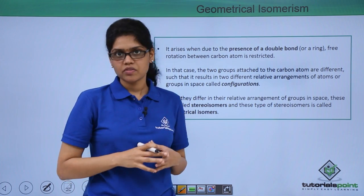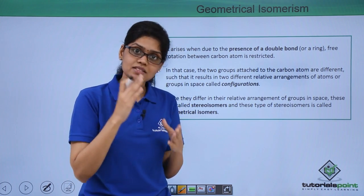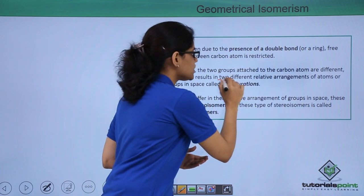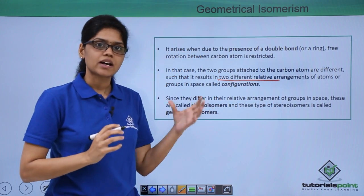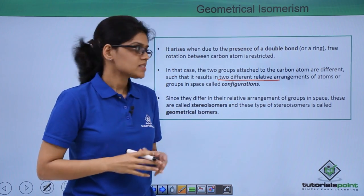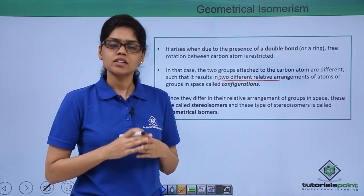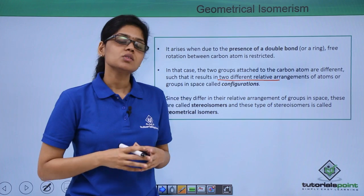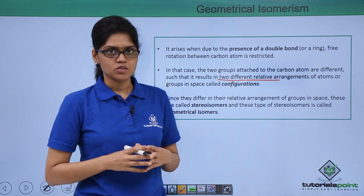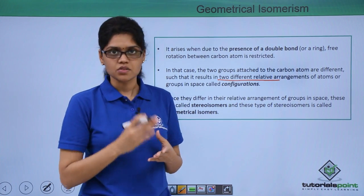This is a very unfavorable situation and that is precisely why we end up getting different relative arrangement of atoms or groups. These are also called configurations because they cannot be interconverted at room temperature. There are two types of geometrical isomers which are called cis and trans.